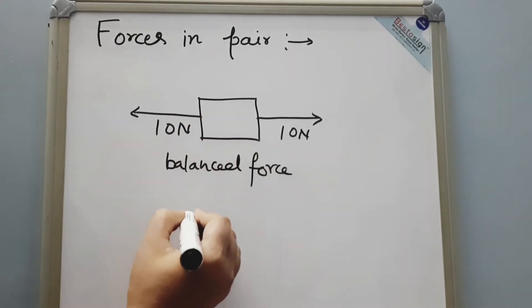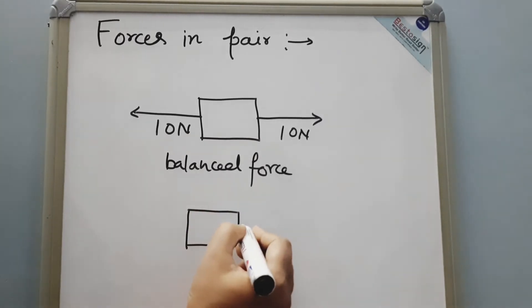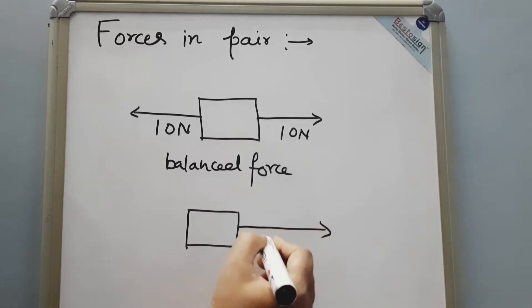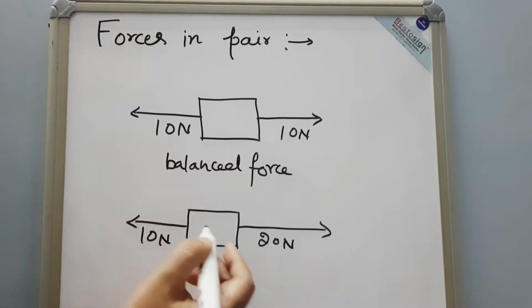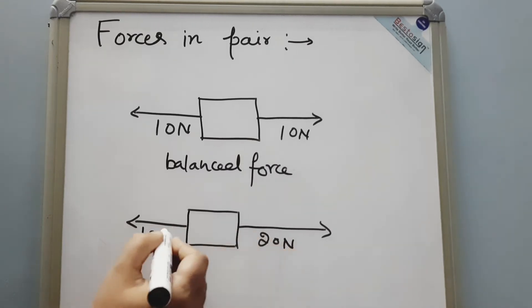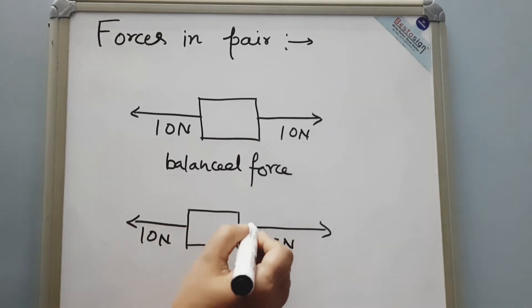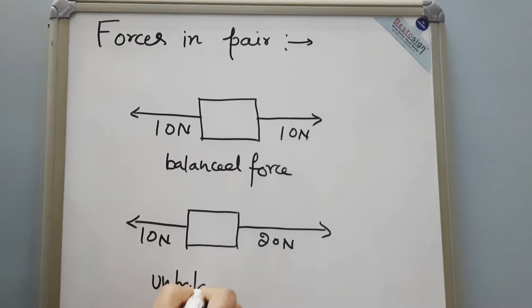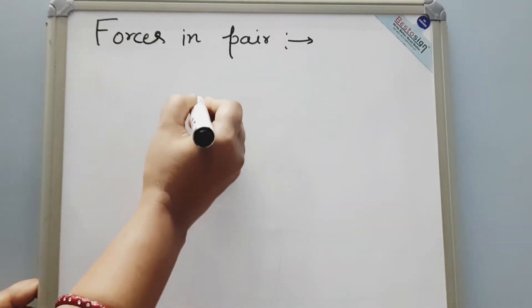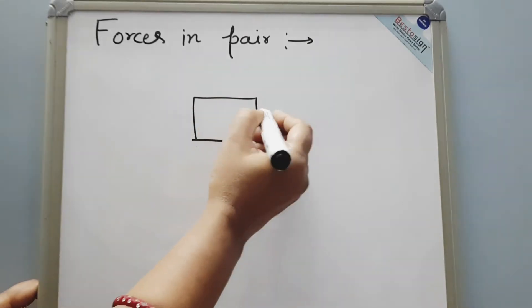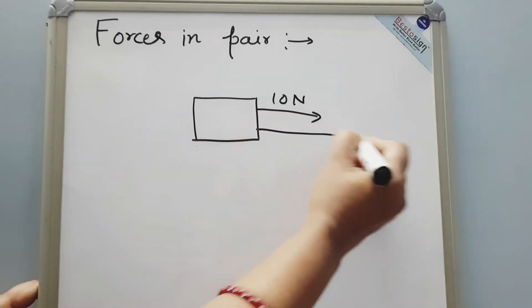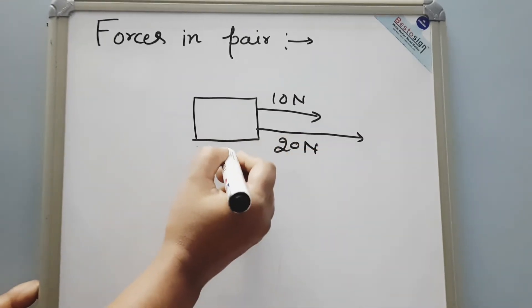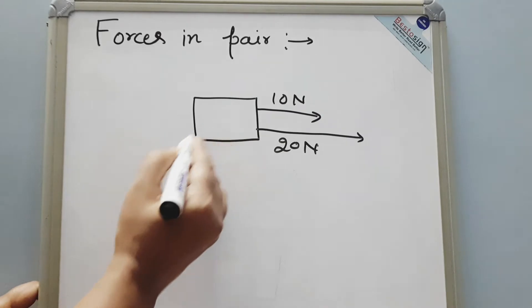In another situation, suppose an object is again under two forces — one force with 20 Newton and another force with 10 Newton. Here the forces are in opposite directions but not the same size — they are different in size — so this situation is called unbalanced forces. Another example: suppose two forces work on an object in the same direction, one with 10 Newton and another with 20 Newton. This is also a situation of unbalanced force.